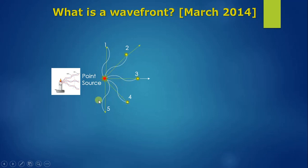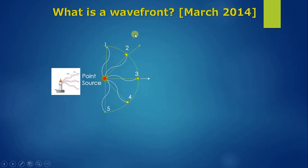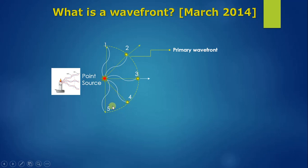From this point source, all these waves are traveling a certain distance in a certain interval of time and reaching points one, two, three, four, and five. Assume that all these points are at equal distance from this point source. If you join all these points by a surface, this surface will be called a primary wavefront — because this is a surface of constant phase, and all these waves from the point source are reaching this surface in equal time.